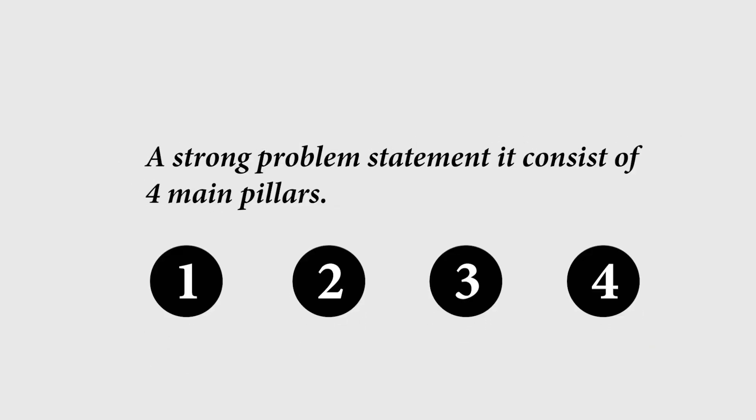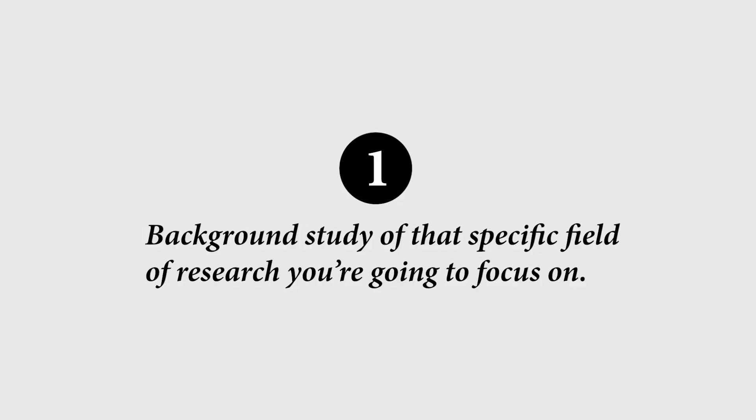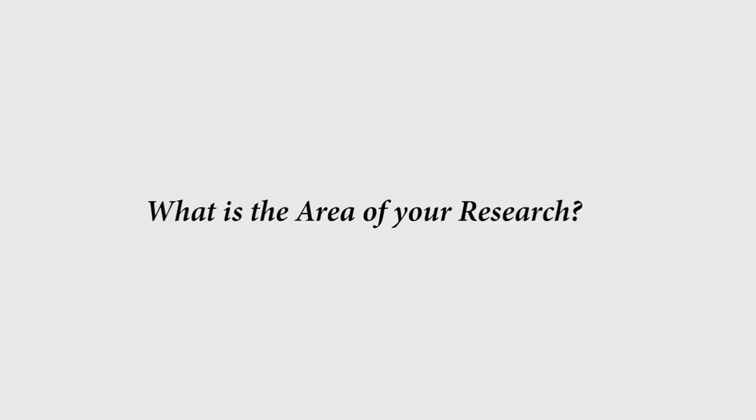A strong problem statement consists of four main pillars. The first one is the background study of that specific field of research you are going to focus on, and for that purpose you have to first select the area of study — what is the area of your research? This is the broad area on which you are focusing, and by keeping in view those main keywords or key terms you are going to move further to decide your research topic and research problem.